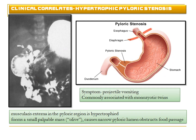The stomach is not commonly associated with developmental abnormalities, but pyloric stenosis can occur in the pyloric region. This happens because of hypertrophy of the muscularis externa — specifically the circular layer — causing a narrow pyloric lumen that prevents food from passing into the duodenum. This hypertrophied mass is clinically palpable as an olive-shaped mass and causes projectile vomiting. It is commonly associated with monozygotic twinning.